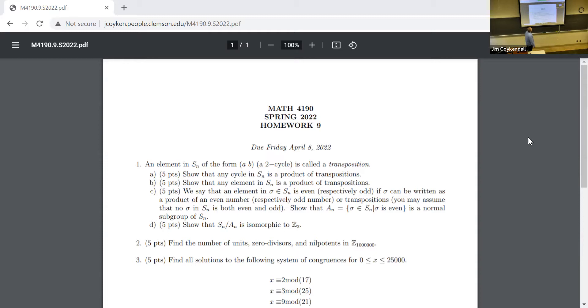We say an element sigma in S_N is even, respectively odd, if sigma can be written as a product of an even number, respectively odd number, of transpositions. Now, this is important. You may assume that there's no element of S_N that is both even and odd. That requires proof, right? But it is true. Notice this element right here can be written in multiple ways, right? Or you could even do something more fancy. Notice there. Notice that this is odd by definition because it's one transposition. Let's count that here. One, two, three, four, five, six, seven, eight, nine, ten, eleven.